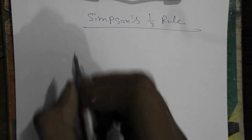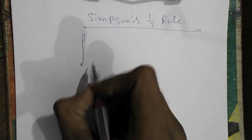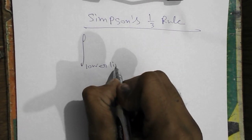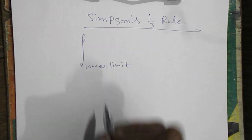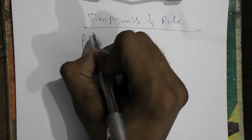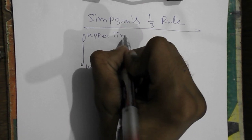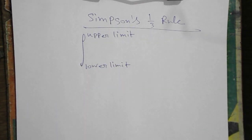Today we will learn about Simpson's one-third rule. To know Simpson's one-third rule, we must know something like this is called lower limit and here this is called upper limit.